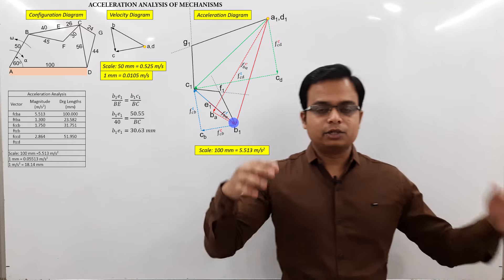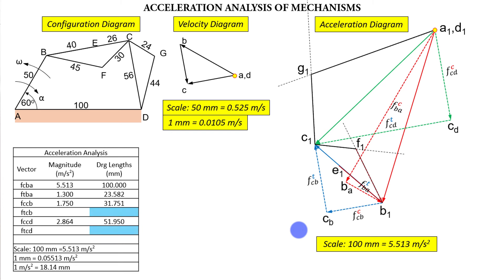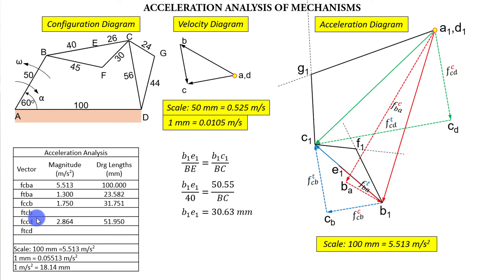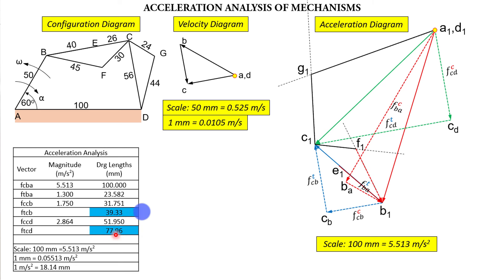Our task is now almost over — we just need to go through the calculations. The FTCB and FTCD values, which were initially unknown, can now be measured from the acceleration diagram. Measure those tangential component lengths. The problem asks for angular accelerations of links BC and CD, and linear accelerations of points E, F, and G.